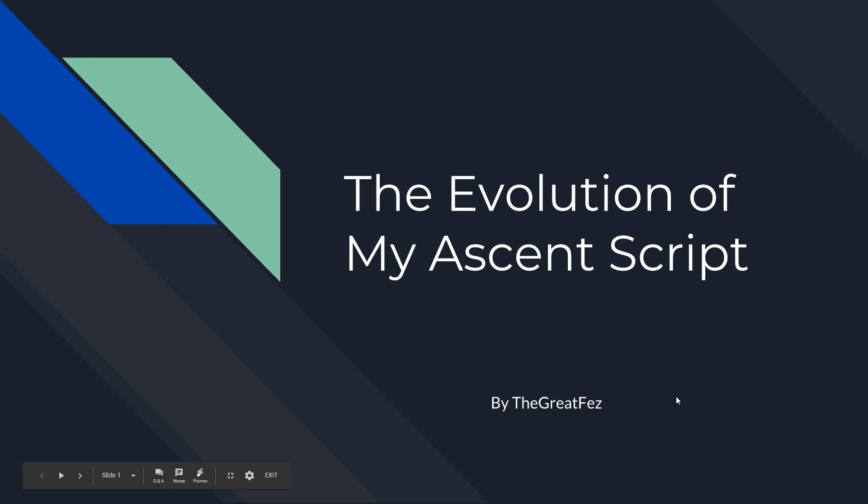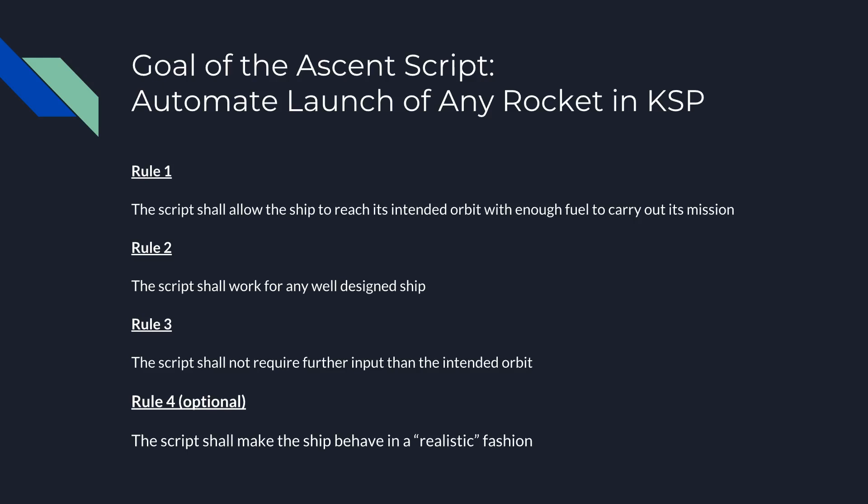I also created this presentation to help me go through it. The first thing I want to do is go over the rules, or the goal of this Ascent Script. It should be a general script. The first rule is that it shall allow the ship to reach the intended orbit with enough fuel to carry out its mission — so that translates to: the script must be efficient.